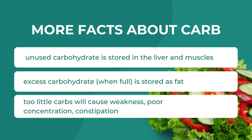When you overdo it and eat too many carbohydrates, especially the simple ones, your body uses what it needs and the remaining unused carbohydrates are stored in the liver and muscles. Remember, carbohydrates' main function in the body is to provide energy. The rest that are not used are stored in the liver and muscles, and sometimes in cells and the brain too.